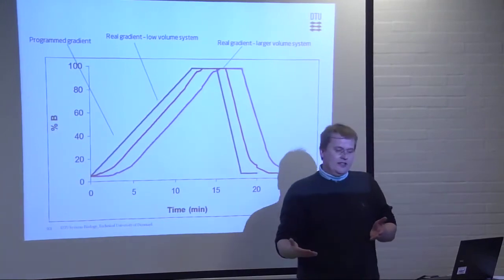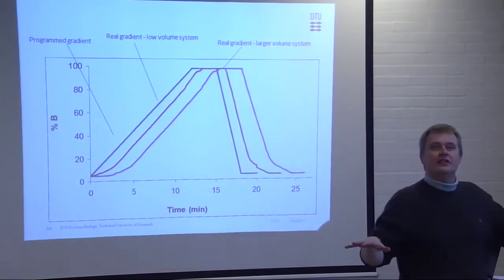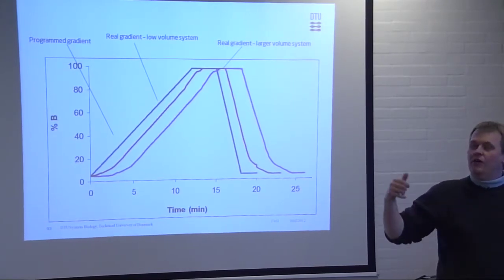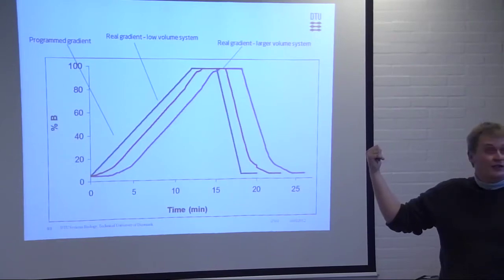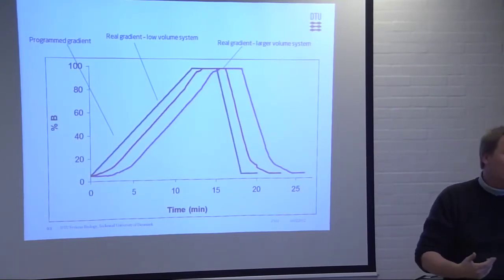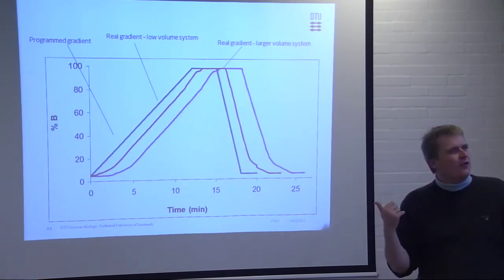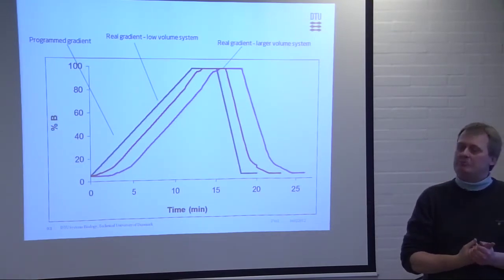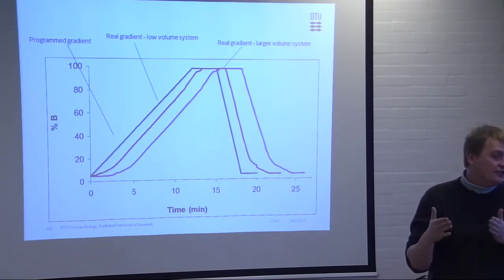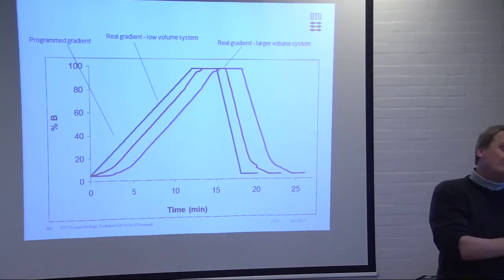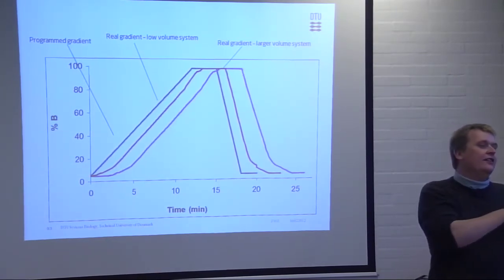So it also means that you can think that you have two identical HPLC systems in the lab, and they may not be so. Also, another thing is that the scientific papers you read, that this was done on a Waters Acquity, or an Agilent 1100 system, they're probably not going to write which mixer size they have. So, you cannot use their retention times, even though you buy the same column, because you don't know the delay of their gradients.